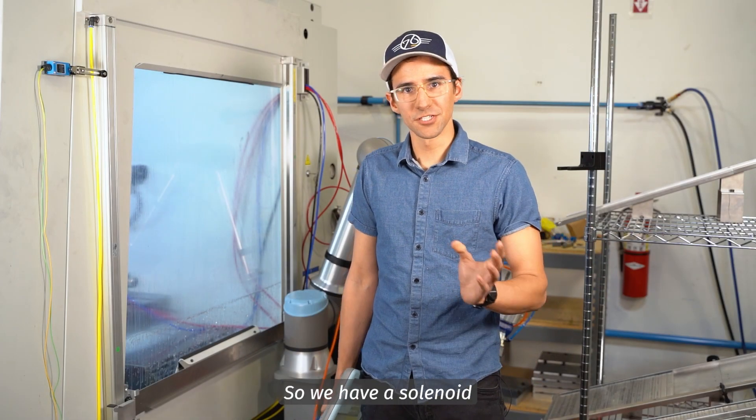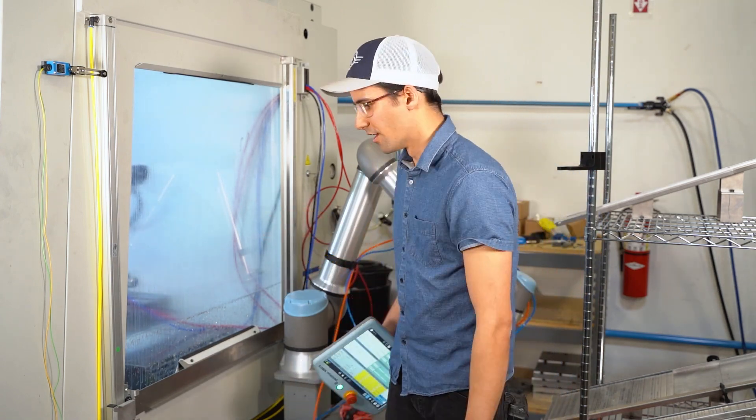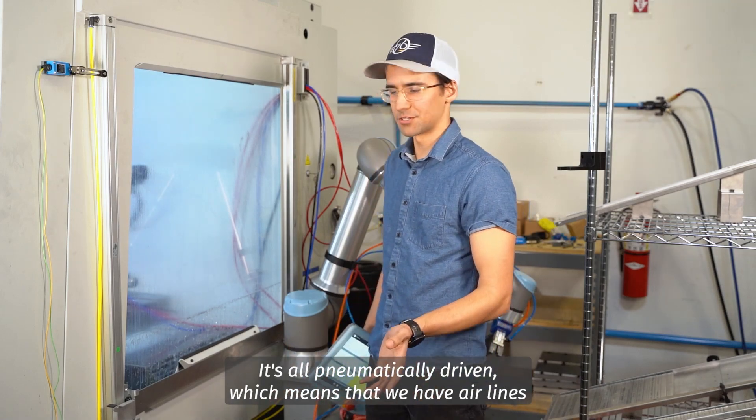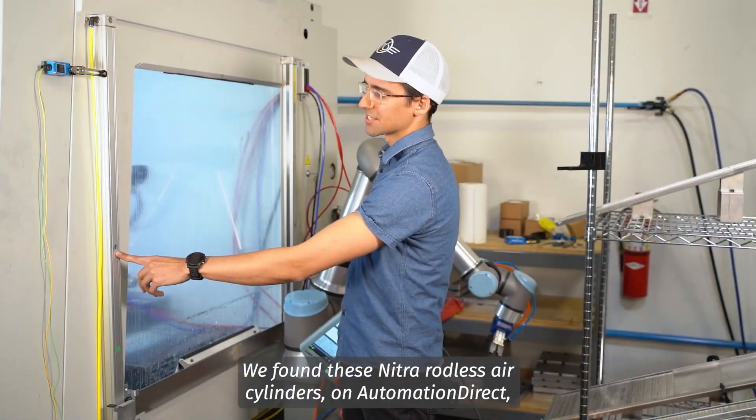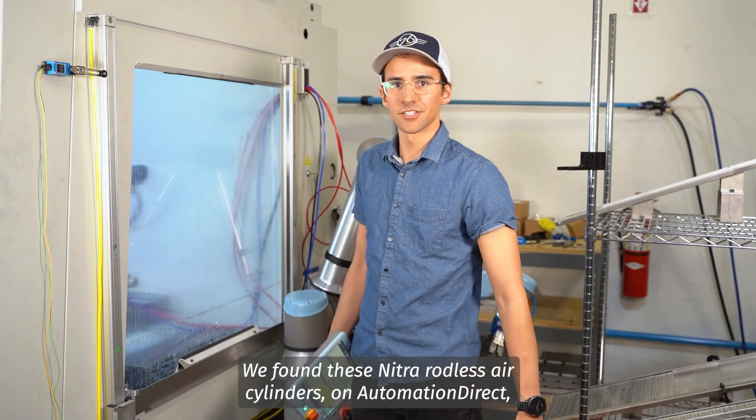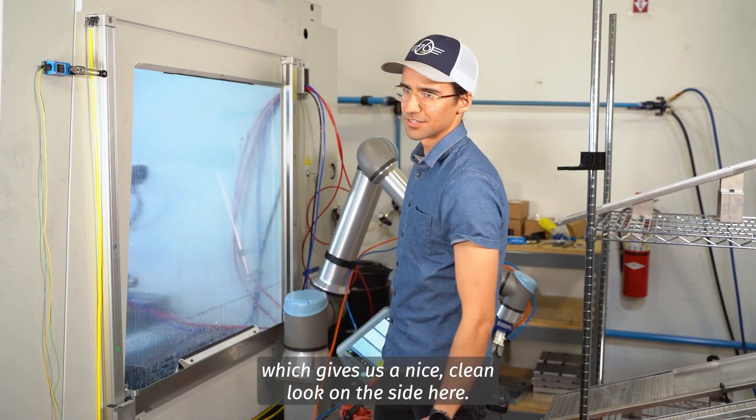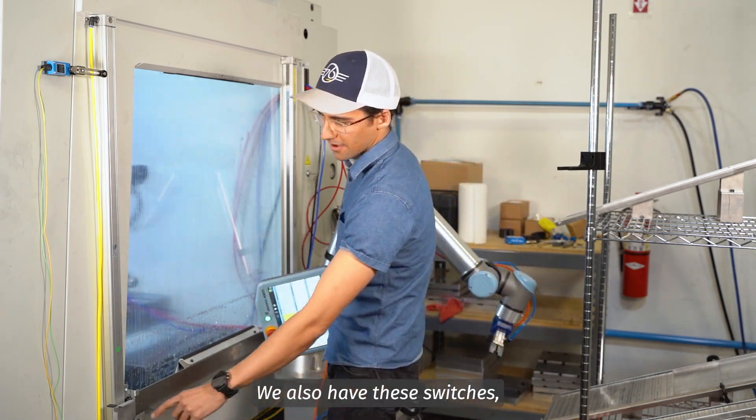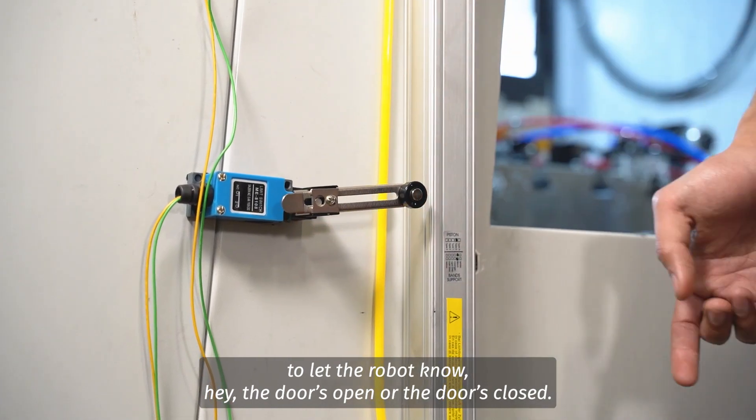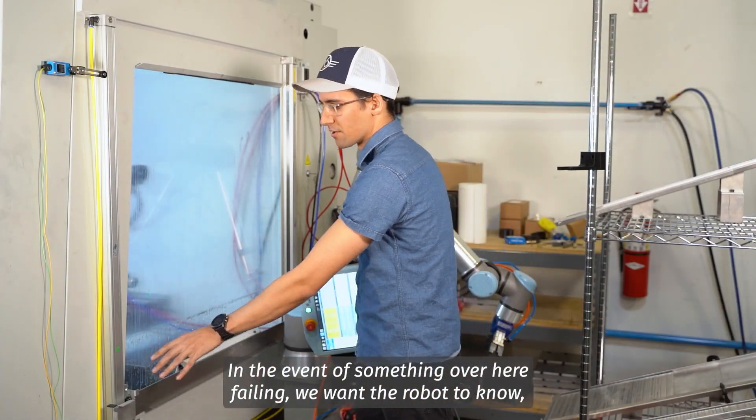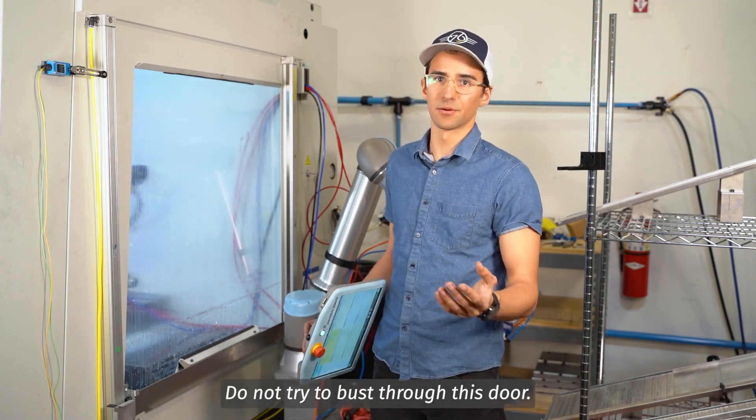So we have a solenoid hooked up to the robot that controls the door on the side here. It's all pneumatically driven, which means that we have airlines running pretty much everywhere. We found these Nitra rodless air cylinders on Automation Direct, which gives us a nice clean look on the side here. We also have these switches to let the robot know, hey, the door's open or the door's closed. In the event of something over here failing, we want the robot to know, hey, this failed, do not try to bust through this.